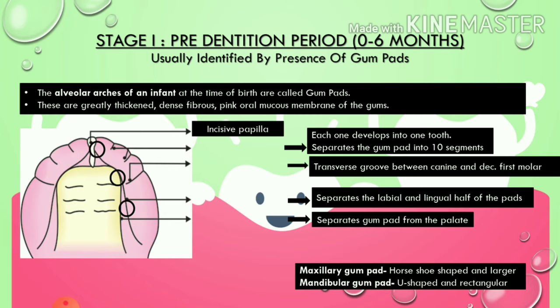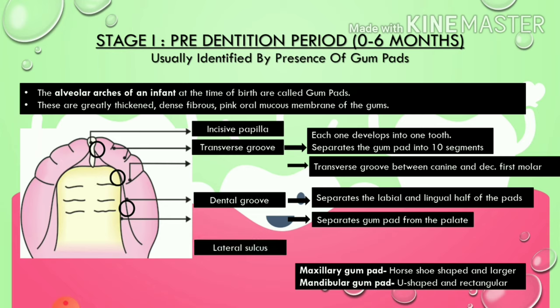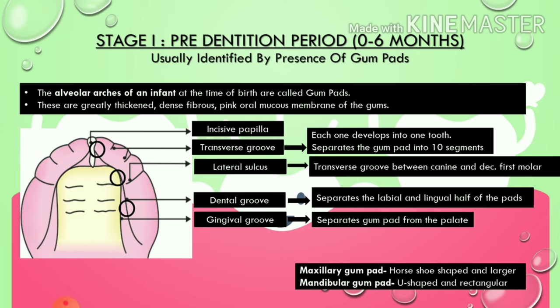Firstly, there is an incisive papilla. From this incisive papilla there appears a groove which travels backwards, called the dental groove — it separates the labial and lingual halves of the pad. Then there is a transverse groove which separates the gum pad into 10 segments, and each segment develops into one tooth, giving 10 teeth per arch. There is also a lateral sulcus, which is the transverse groove between the canine and the deciduous first molar, and lastly the gingival groove, which separates the gum pad from the palate.